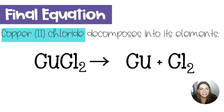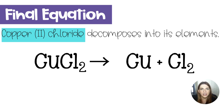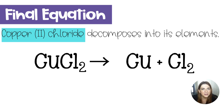So our final answer here is CuCl2 yields Cu plus Cl2. I hope that you found these really easy. A lot of the time, you're just going to have to rely on your knowledge of naming compounds, and then a little bit on the types of chemical reactions. If you have any questions, leave them in the comment section below the video. Subscribe so you don't miss the next one. Bye!